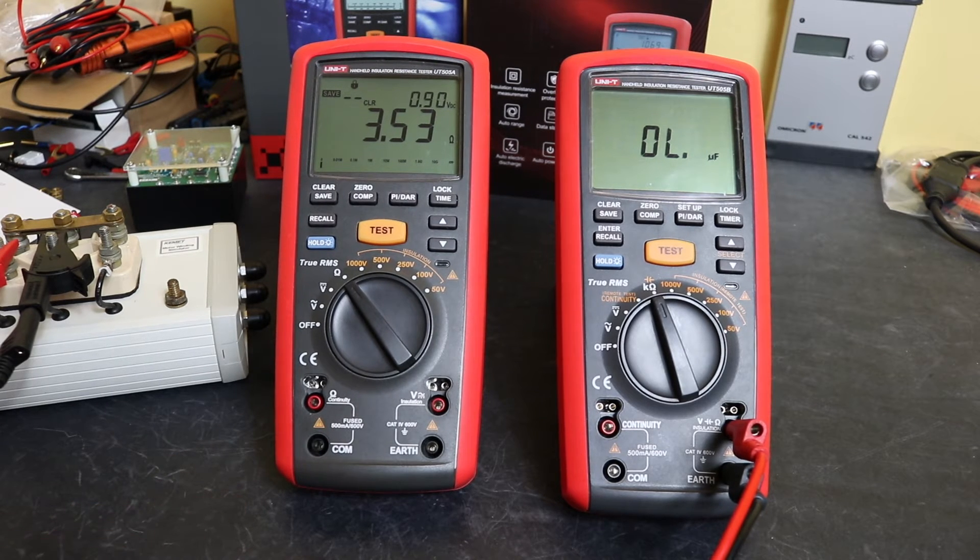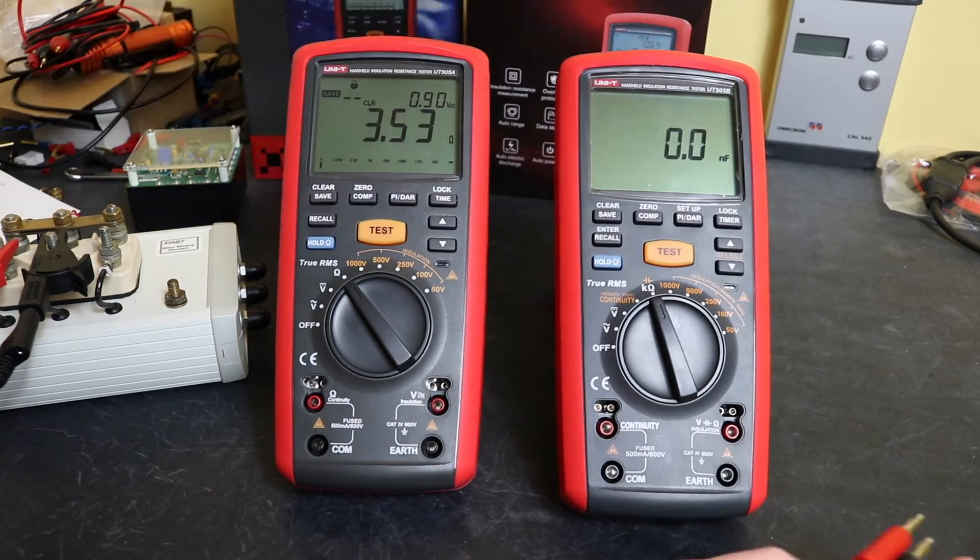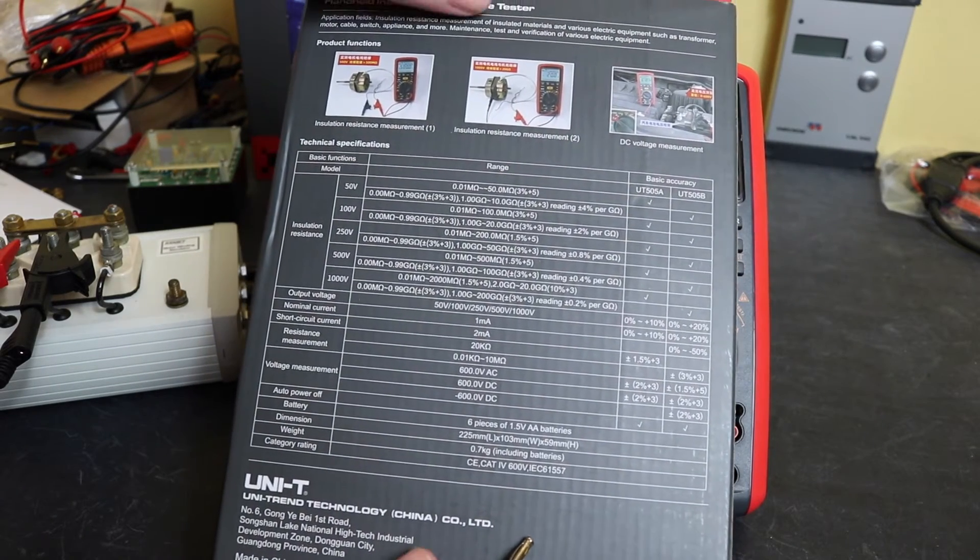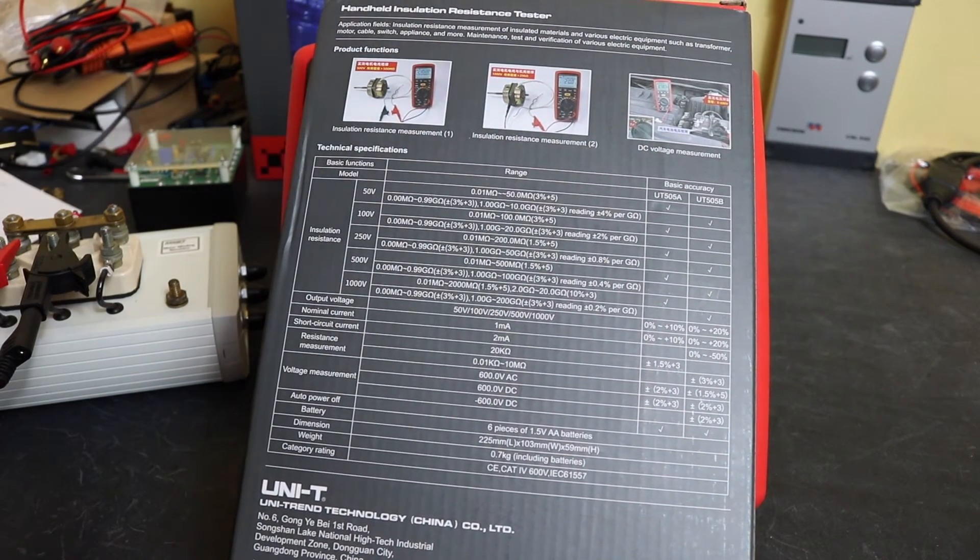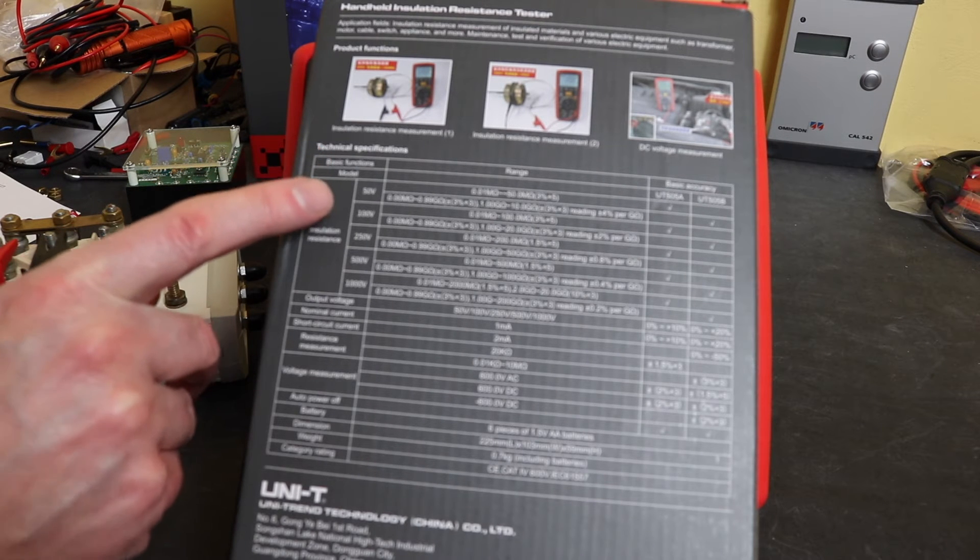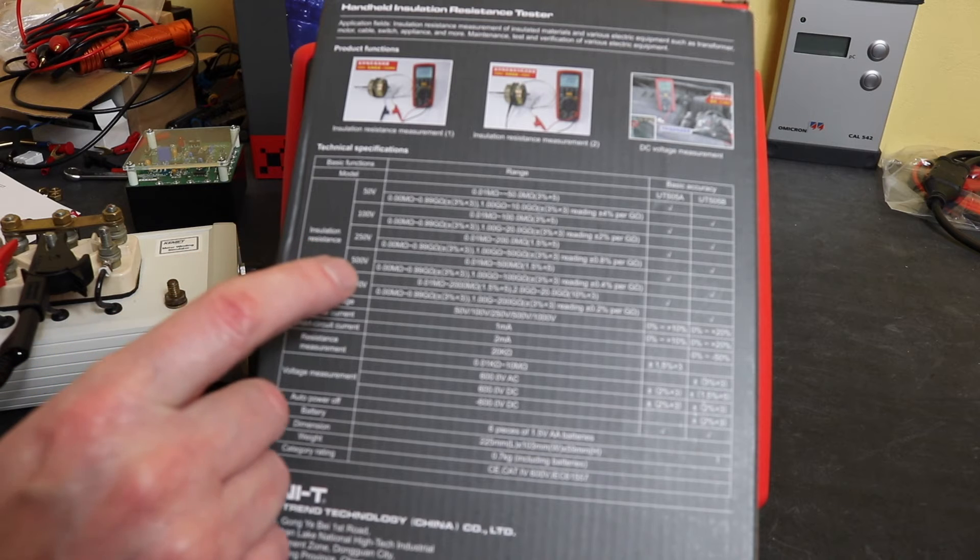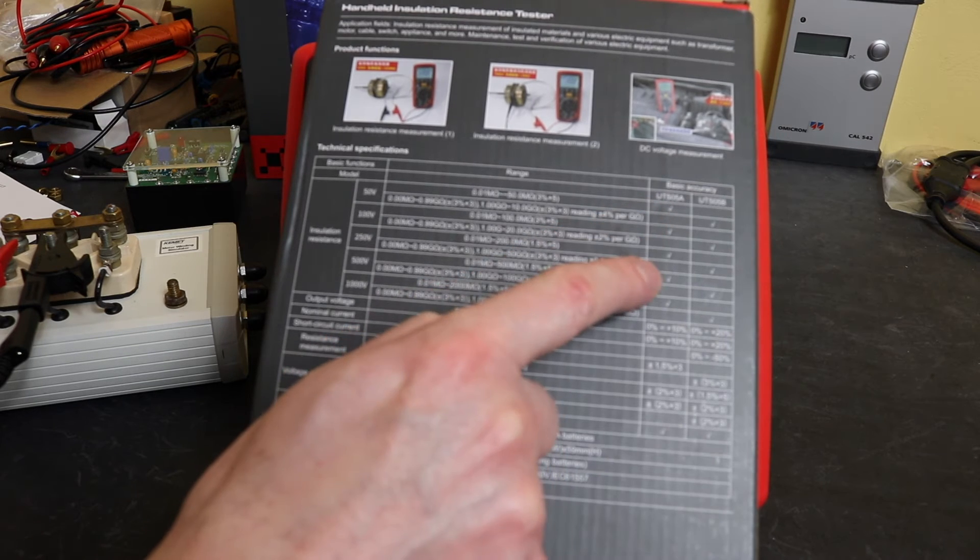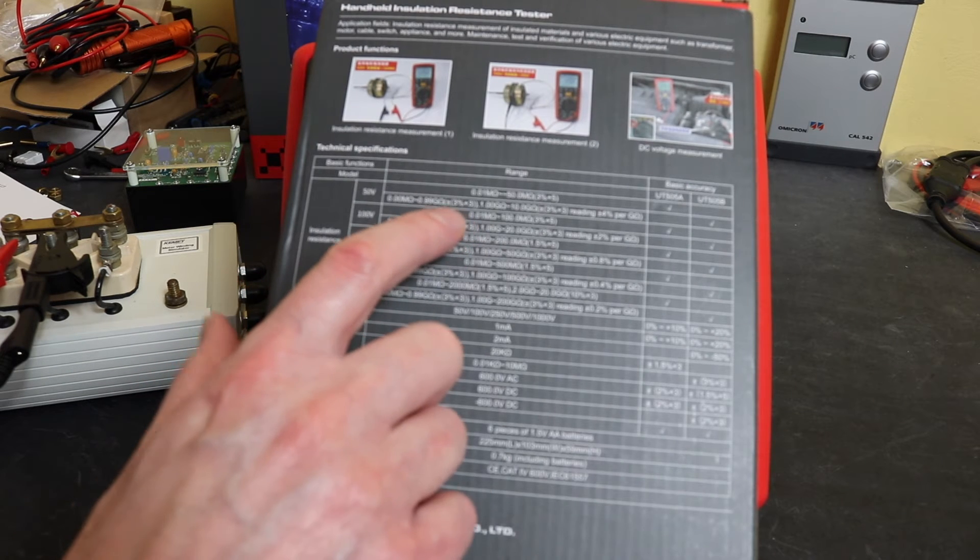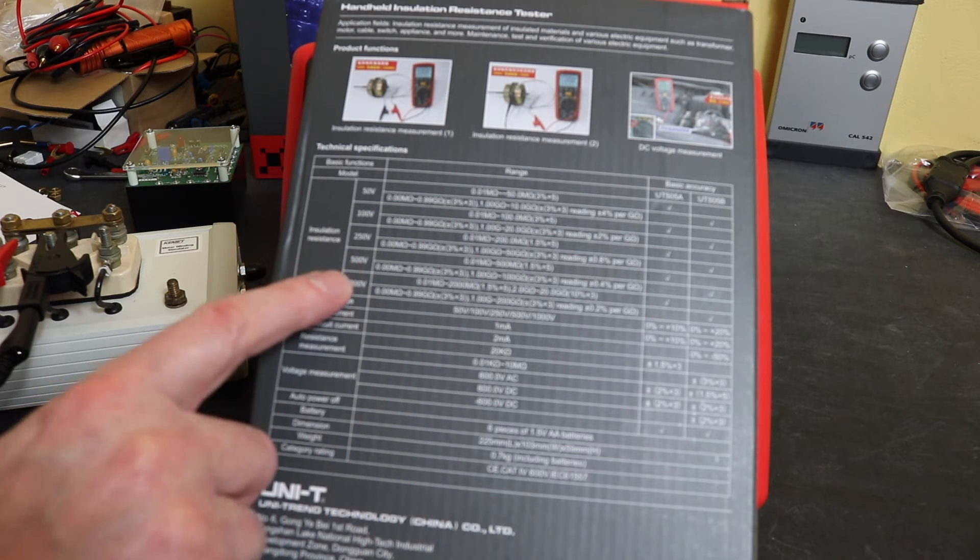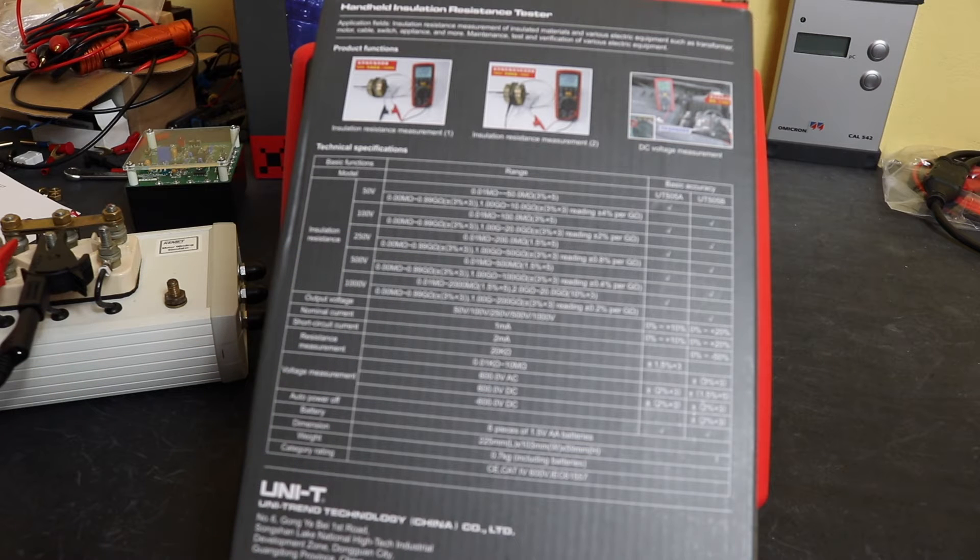You then move on to the insulation test functions. What you can actually do on the box that came with the UT505B, you do actually get a little table on the back that shows you what the difference is between the two instruments, especially with regard to the insulation test function. You can actually see they all have the same voltage. However, on the UT505B you get these extended ranges that you don't see on the UT505A. Accuracy wise, you get a slightly better response from the UT505B for the lower settings. However, as you get up to the higher voltages, that switches and you get a slightly better accuracy specification for the UT505A.